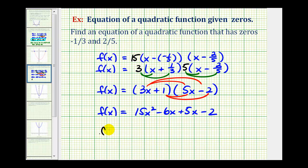So our function f(x) is equal to 15x² minus one x or just minus x minus two. So when given zeros that are fractions, it's more common to clear the fractions from the binomial factors before we multiply and determine a possible quadratic function.